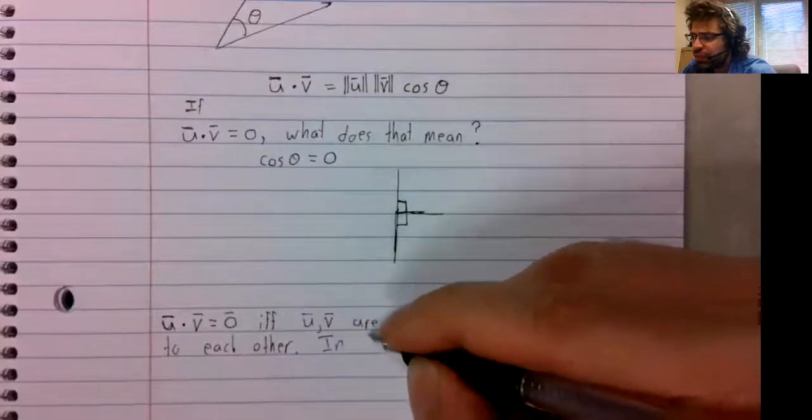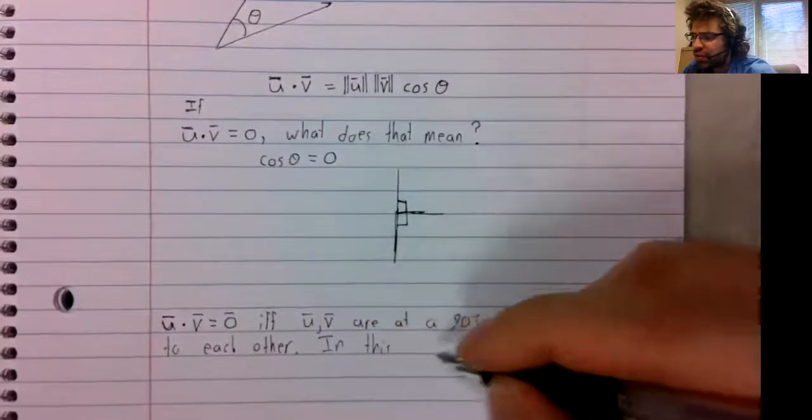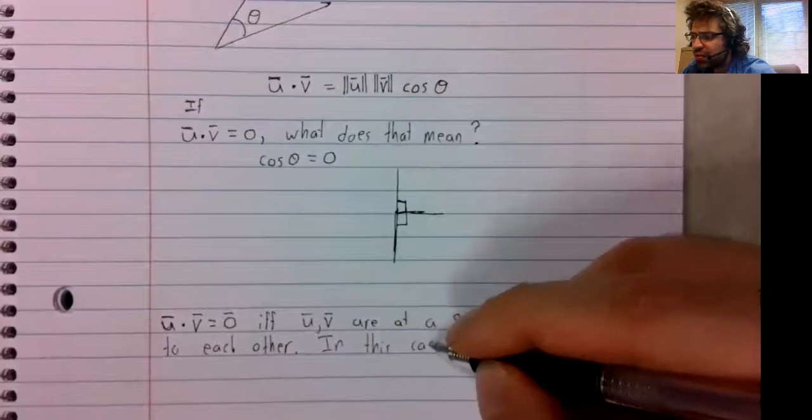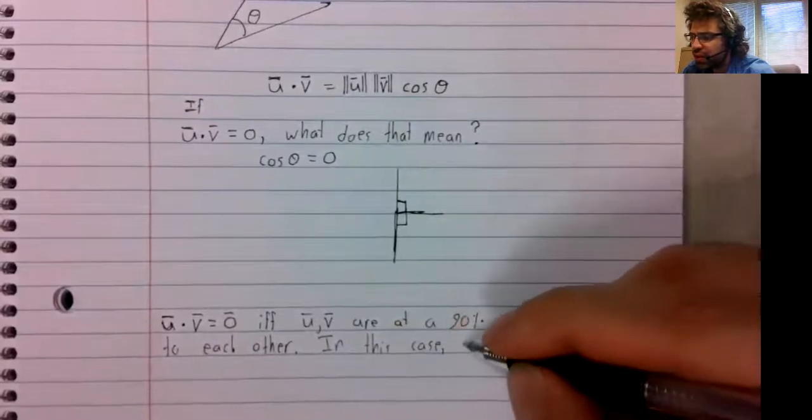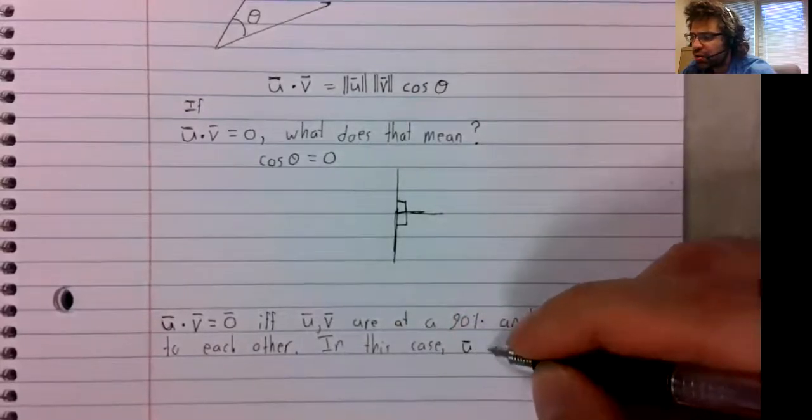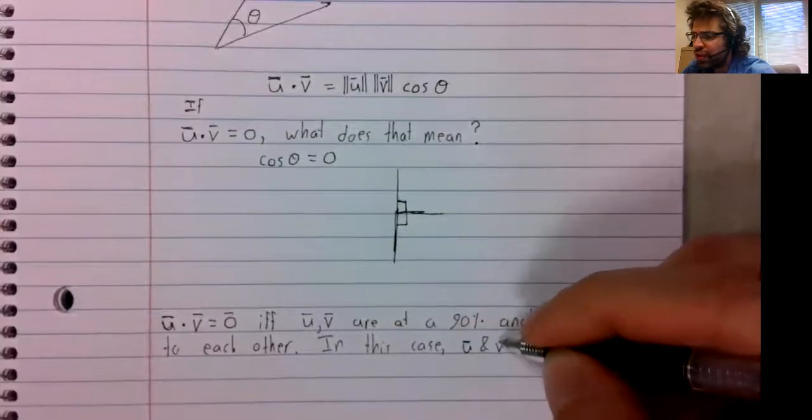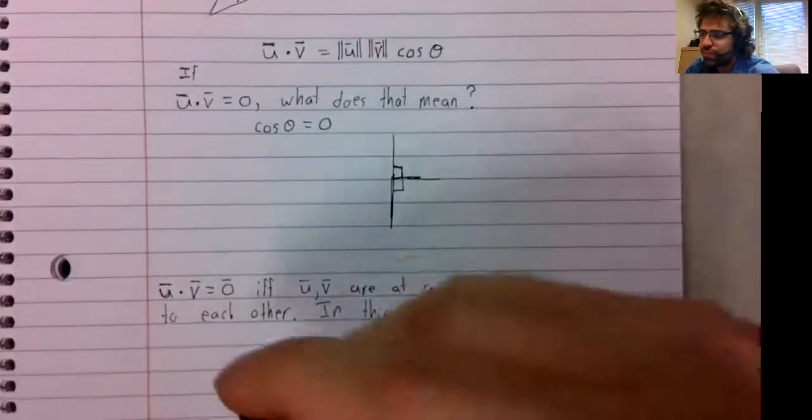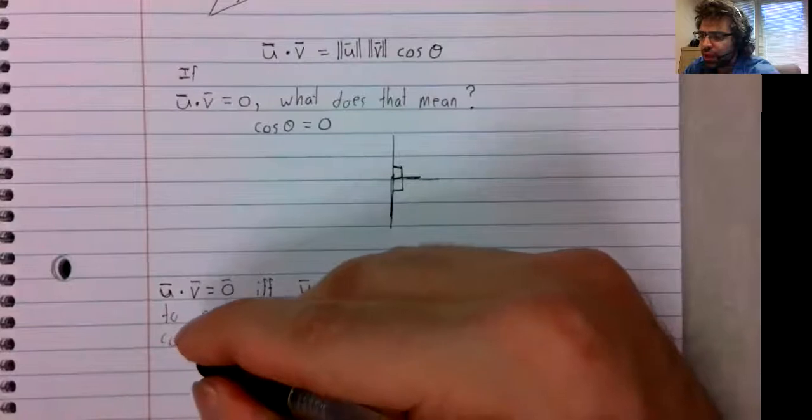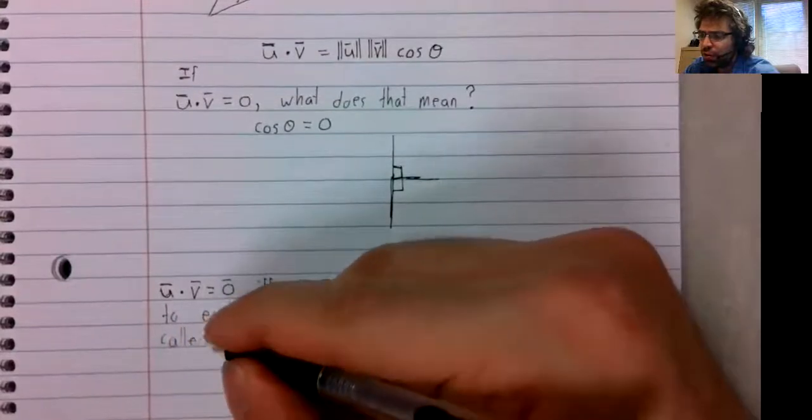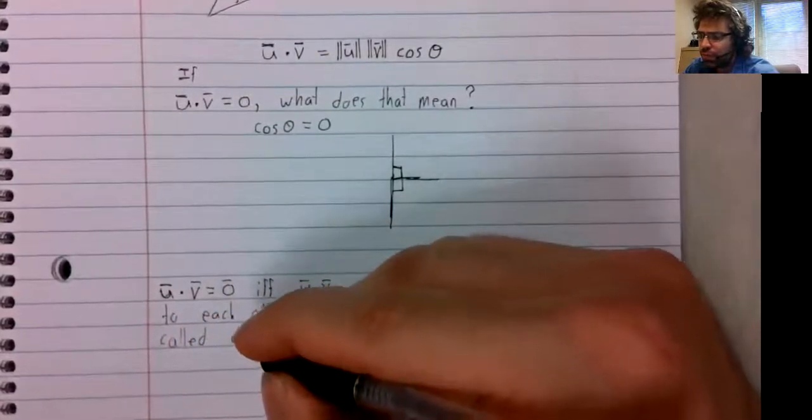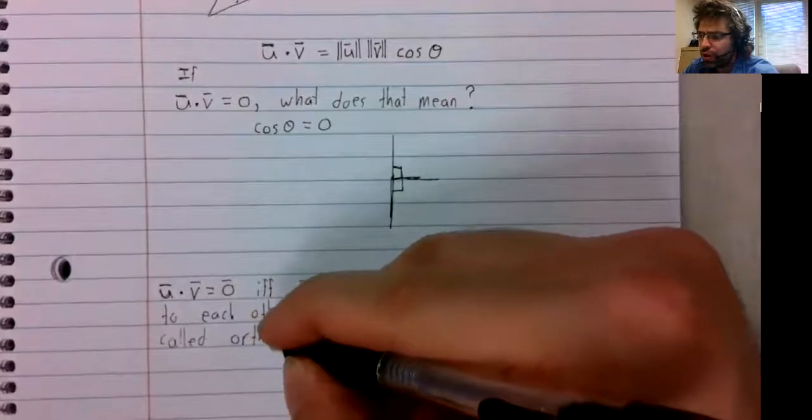In this case, the vectors u and v are called orthogonal.